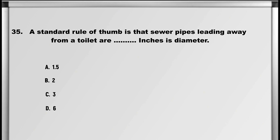Moving on to question number 35: A standard rule of thumb is that sewer pipes leading away from a toilet are how many inches in diameter? A. 1.5, B. 2, C. 3, D. 6. Answer: D. 6.